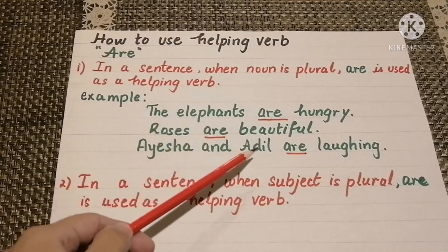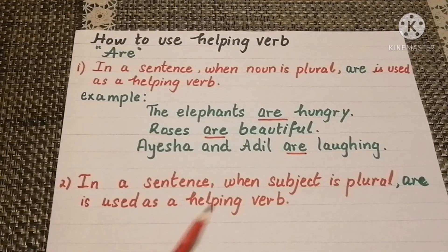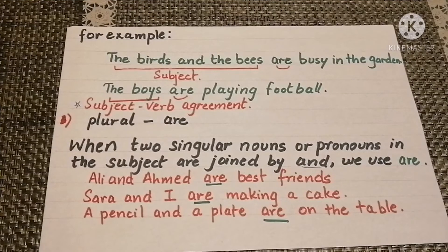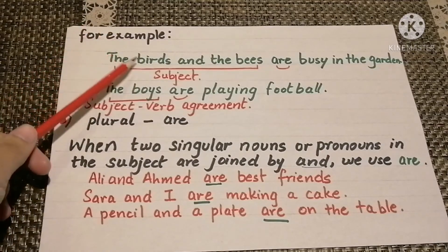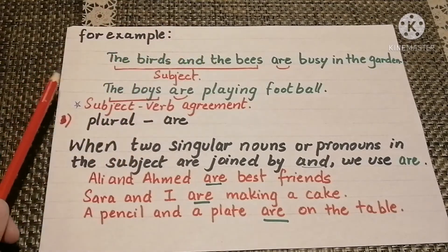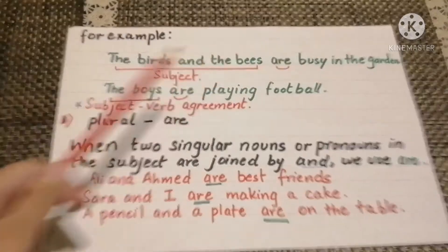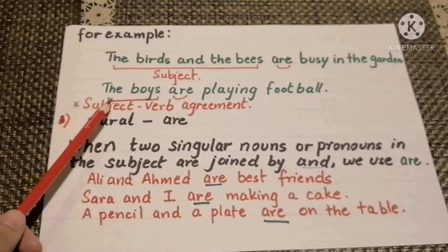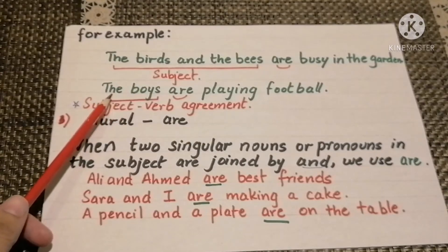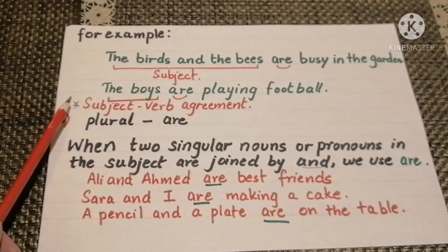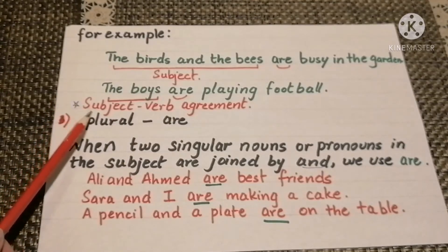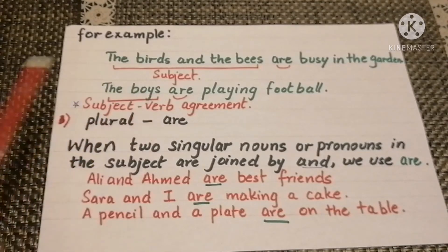Aisha and Adil are two people. In a sentence when the subject is plural, 'are' is used as a helping verb. For example: the birds and the bees are busy in the garden — here the subject, 'the birds and the bees,' is plural, therefore we are using 'are' to complete the sentence. The boys are playing football — here also the subject is plural, so we are using 'are.'